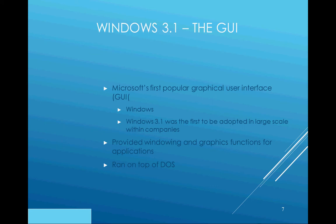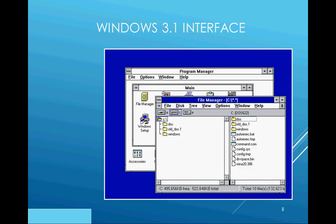Here's what the Windows 3.1 interface looked like. You can see it had something called Program Manager where your programs were located. You could double-click on them to launch them, and here they have File Manager open, viewing the contents of their hard drive.